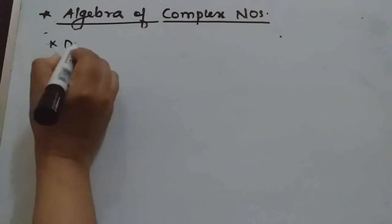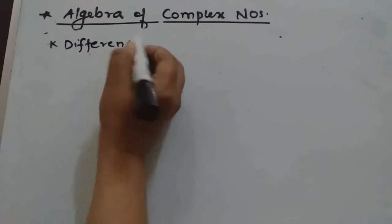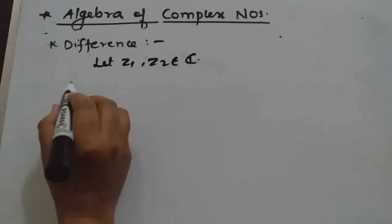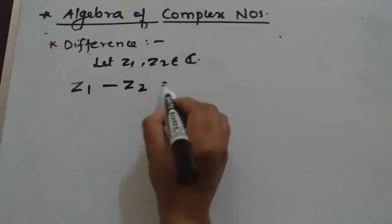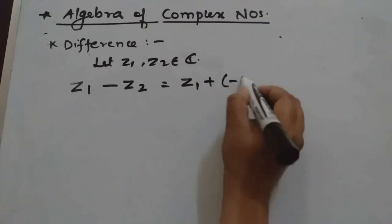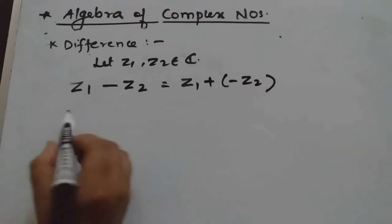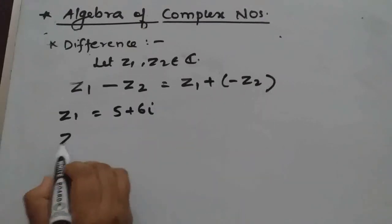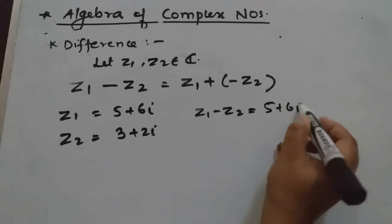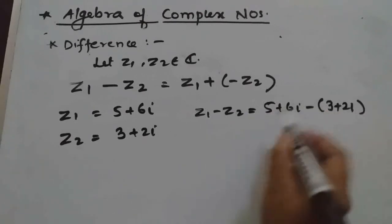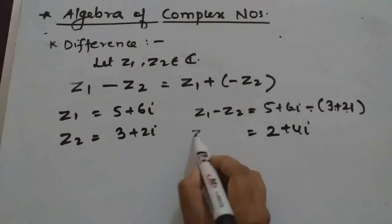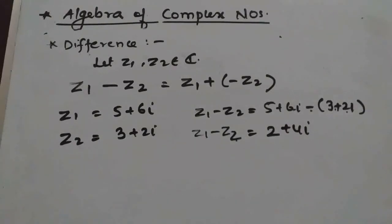Second operation is the difference of two complex numbers. For z1, z2 belonging to complex numbers, z1 minus z2 means adding the additive inverse of z2 to z1. For example, if z1 equals 5 plus 6i and z2 equals 3 plus 2i, then z1 minus z2 equals (5 minus 3) plus (6i minus 2i), which gives 2 plus 4i.